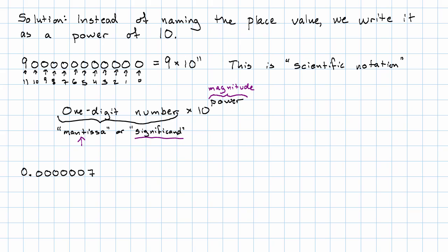Take this number for instance. Counting off the powers of 10 going to the right. Again, the ones place is just 10 to the 0. And then the places to the right of the decimal point are 10 to the negative 1, 10 to the negative 2, 10 to the negative 3, and so on. That place that the 7 is in corresponds to 10 to the negative 7. So here we have the significand is 7 and the magnitude is negative 7.